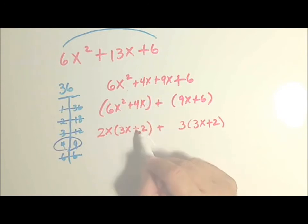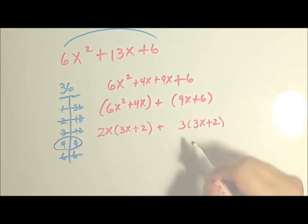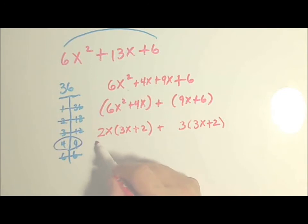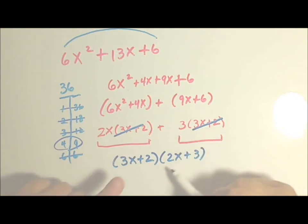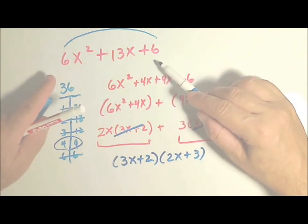Remember, we're adding these two groupings. Now, this whole group and this whole group has something in common. They both have 3x plus 2. So I'm actually going to factor that out of both groups. And what is left behind is 2x and 3.